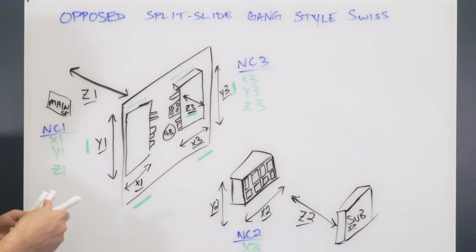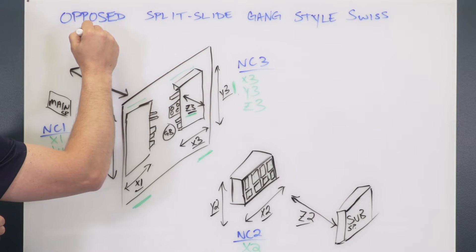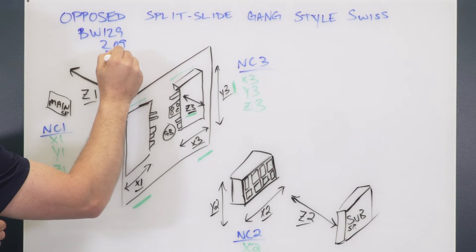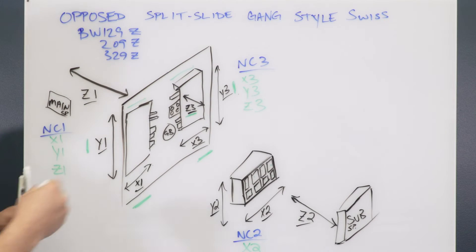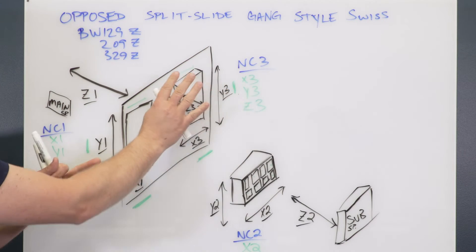This machine particularly that we're talking about would be our BW series. This could be either a 129, 209, or 329Z. We have independent X, independent Y, and a third Z axis that allows us to move that rear gang slide in and out.